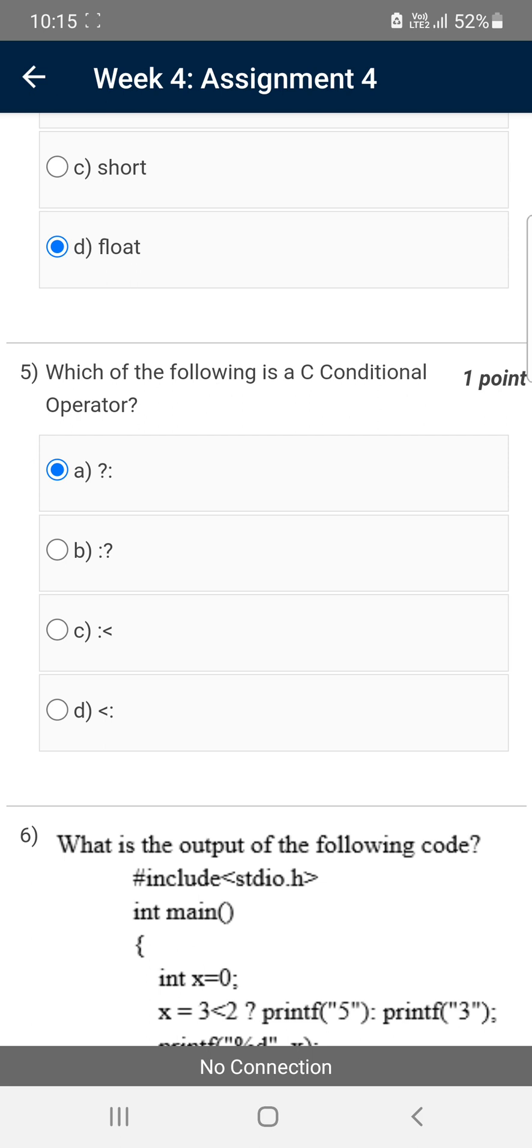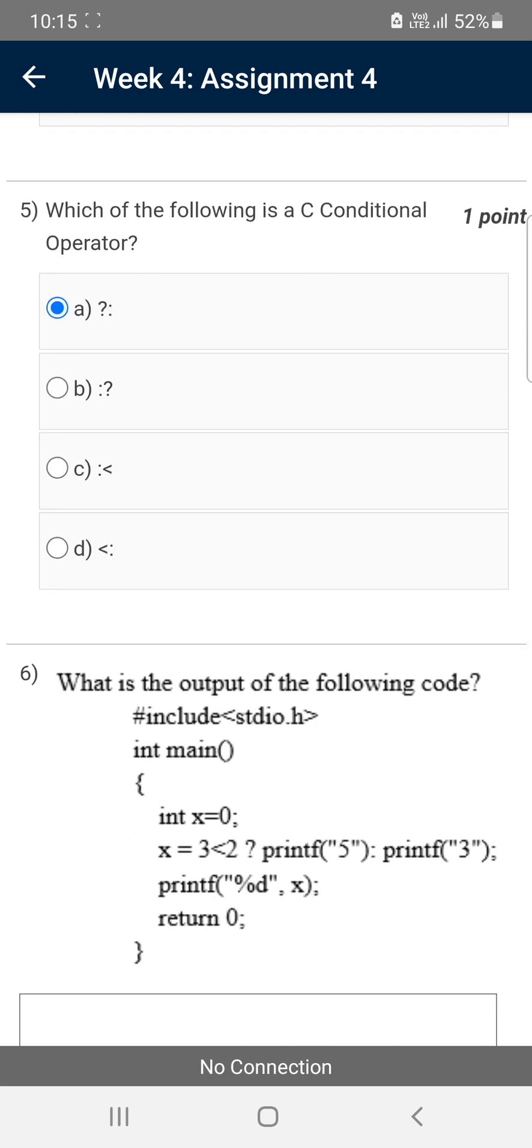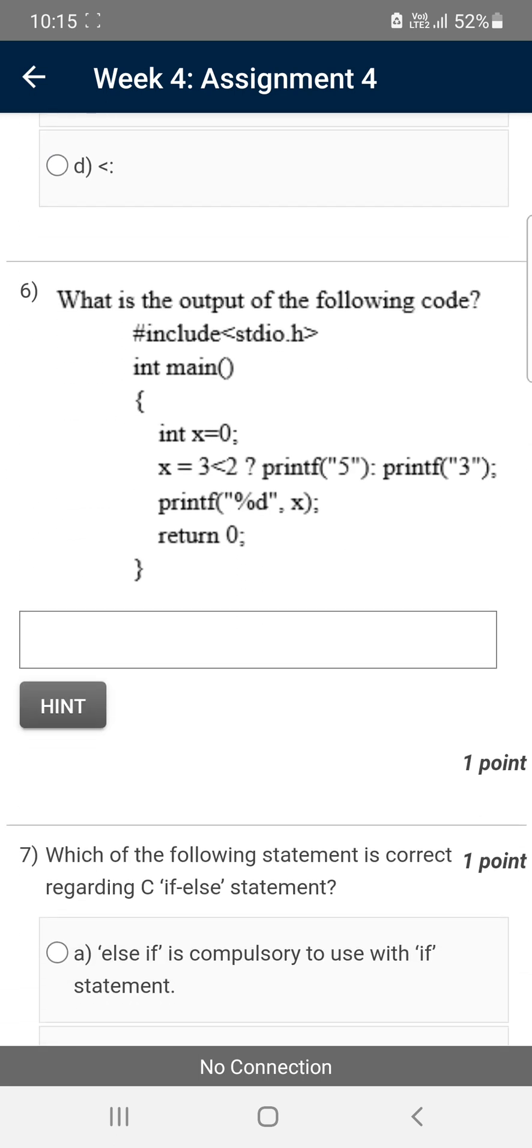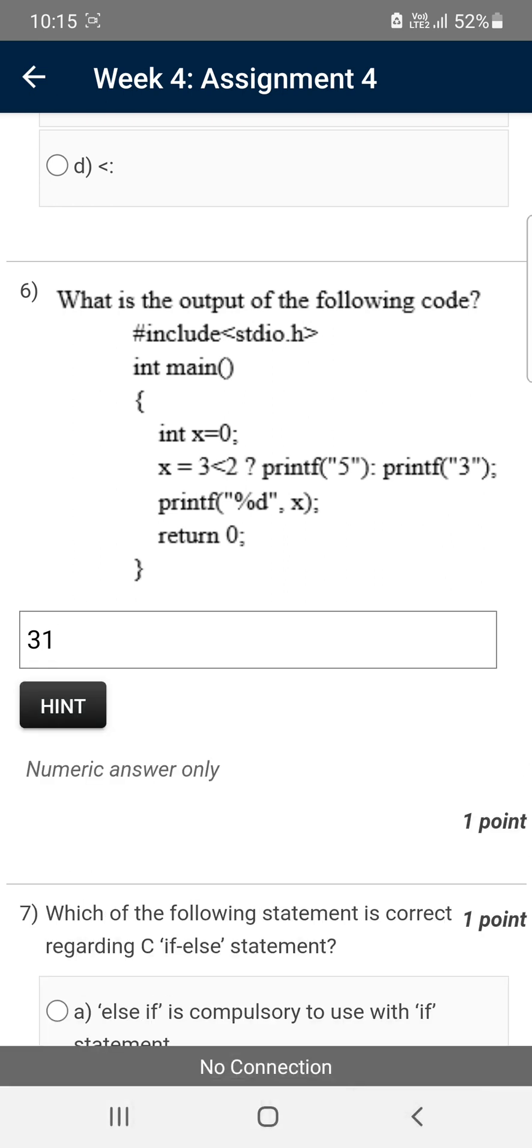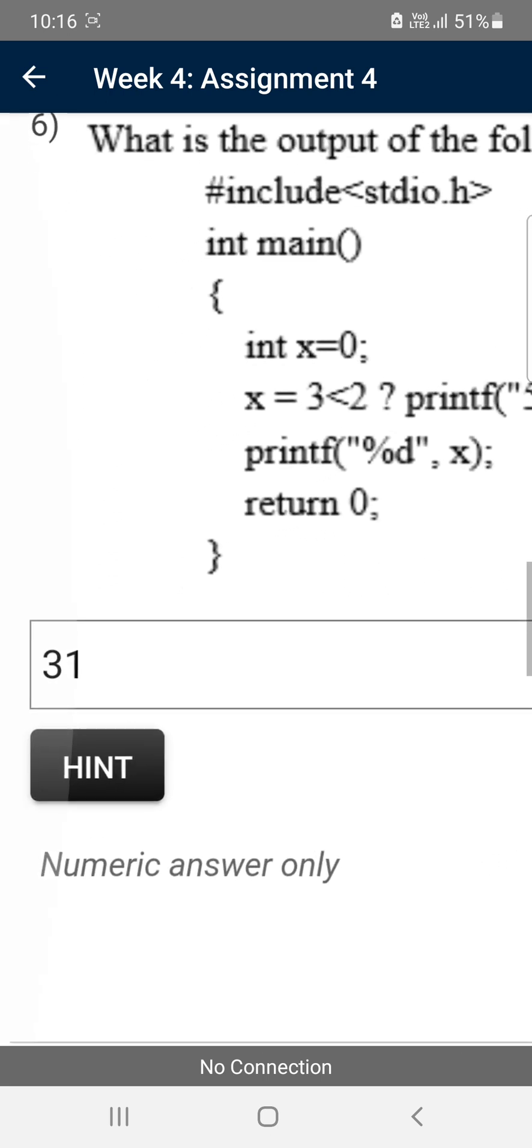Moving on to the sixth question. The sixth question is a code, and they're asking for the output of the code, which we have to type in the given box. When I ran this in the compiler, I got the answer as 31. The hint says numeric answer only, so 31 is correct.